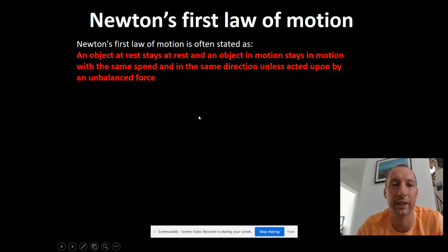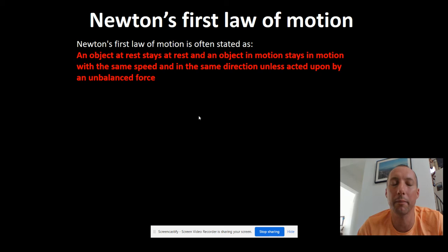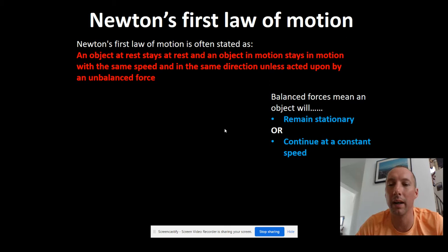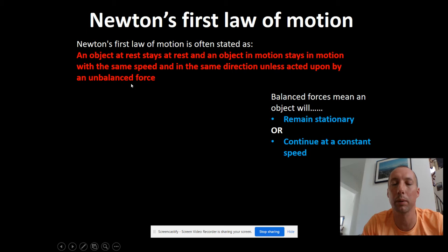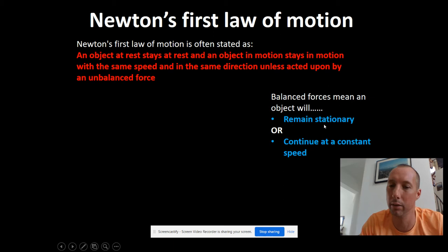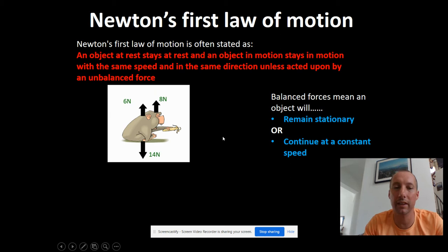Newton's first law of motion states: an object at rest stays at rest, and an object in motion stays in motion at the same speed and in the same direction, until acted upon by an unbalanced force. We'll break it into two parts. If forces are balanced, the object will either remain stationary or continue at a constant speed. So the two possible things that can happen with balanced forces are the object remains stationary or it continues at a constant speed.